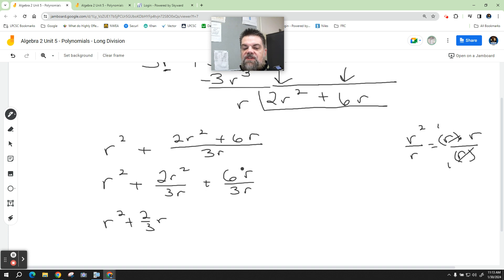Now what happens with these two r's? They reduce down to one. And what is six divided by three? Reduced down to two.